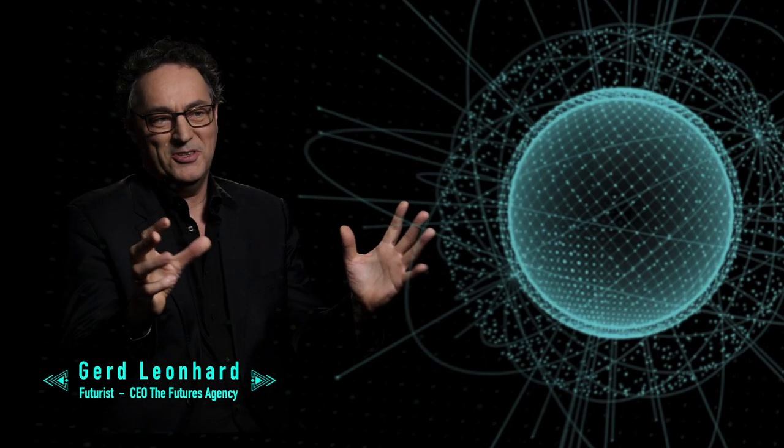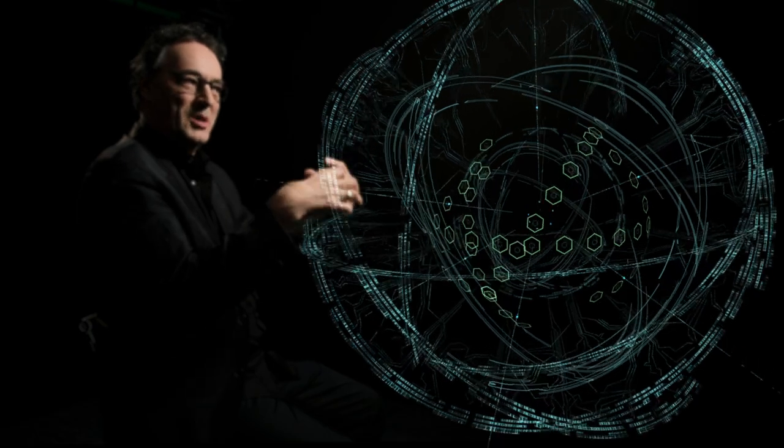Picture the Internet of Things as a giant extension of the current Internet of People, which is roughly only three and a half billion people, but sensor networks, environmental controls, logistics, cars, wristwatches, suits, eyeglasses, everything connected because sensors are becoming really cheap.